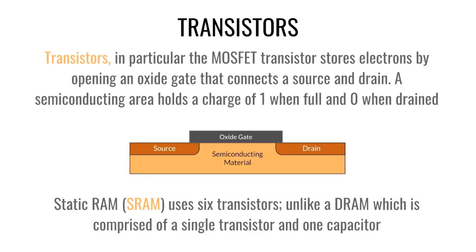Transistors can also hold data. When the gate is charged, the material in the middle can either hold some charge or drain out. It's kind of the opposite — when it's not holding a charge it's holding a one, and when it's full it's holding a zero. It has two states: when the gate is charged it holds one state, when it's not charged it holds another. Transistors do not need to be refreshed, so they are called static RAM. SRAM uses all transistors.